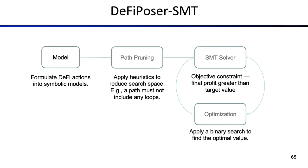DeFiPoser SMT is the other solution. What we do first is create a model that represents the DeFi actions of a particular DeFi platform — for example, Uniswap or Curve. This involves a translation process from Solidity language to the symbolic model language that SMT solvers can operate on. Then we perform a path pruning process, applying heuristics to reduce the search space. An important constraint is that the path must not include any loops — we want to find a finite solution.